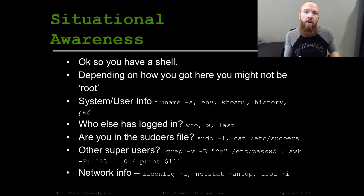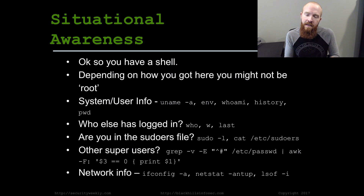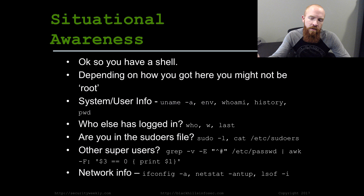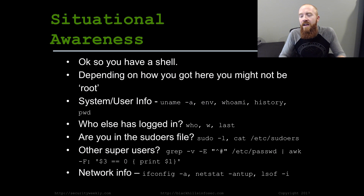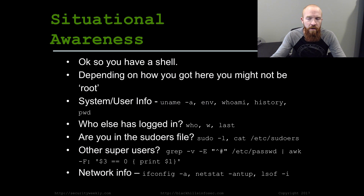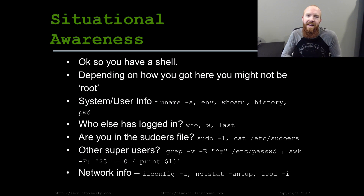We've got to figure out where we are on the network, what services are running, what the OS version is, and whether there are any missing patches. One of the first things I always do is get the kernel information — you can run uname -a to figure out what kernel version you're running, which becomes more important later when we look for exploits. The env command gets you environment variables — a lot of times people put credentials in environment variables, which is crazy. Whoami gives you the current username of the user you're running as.